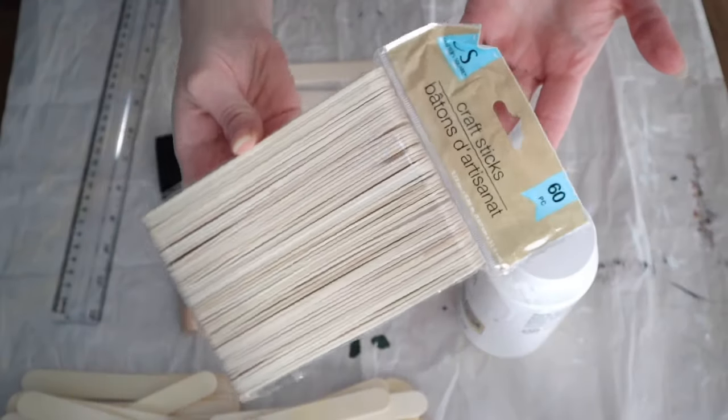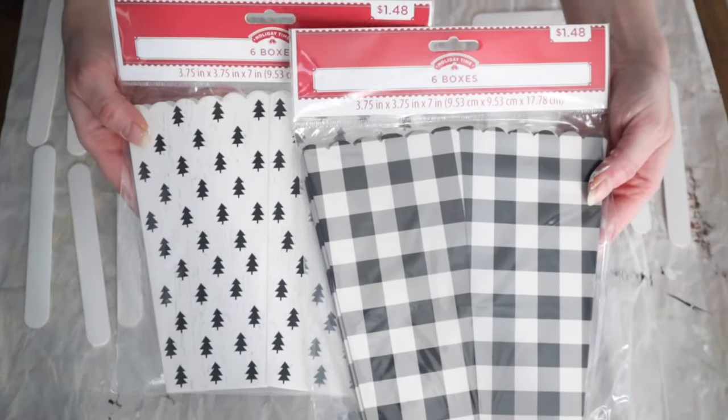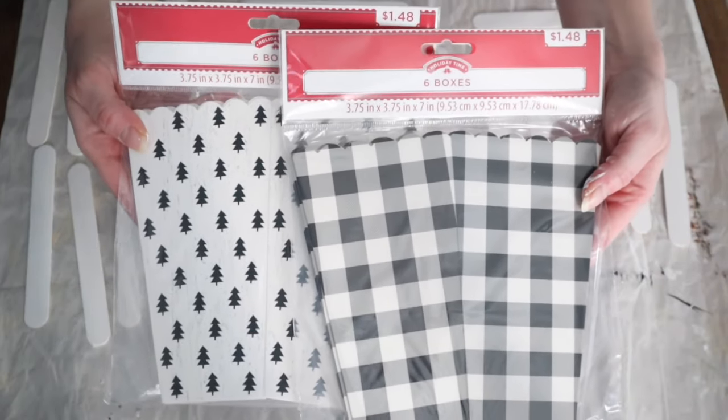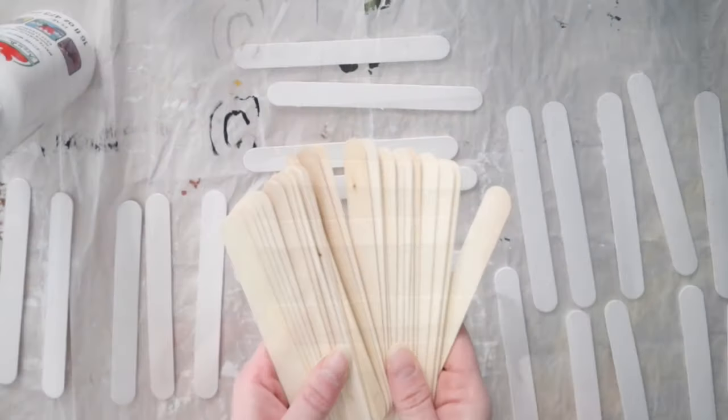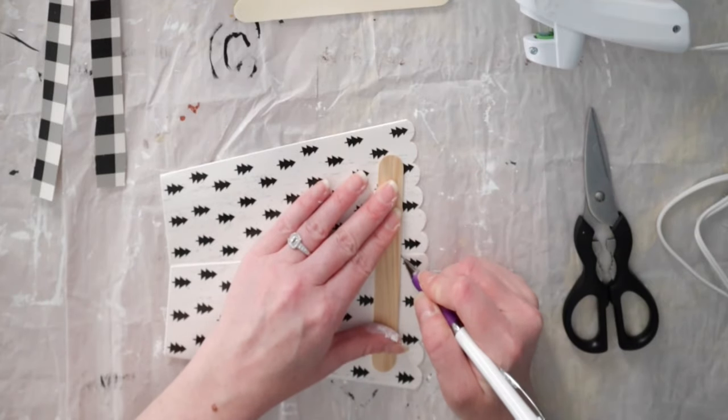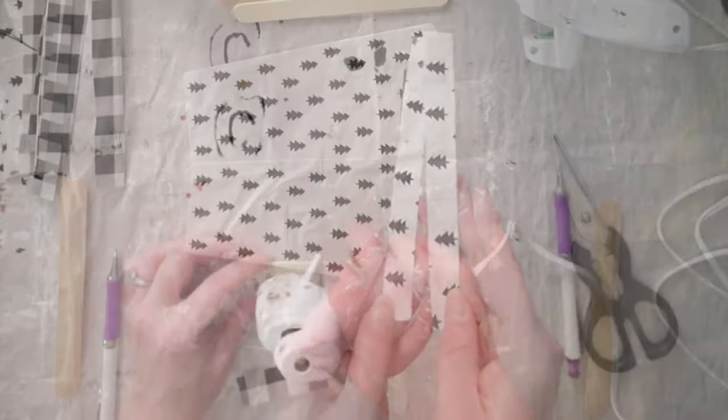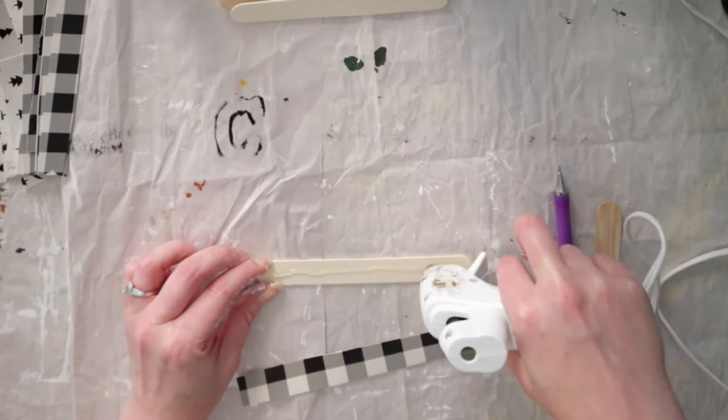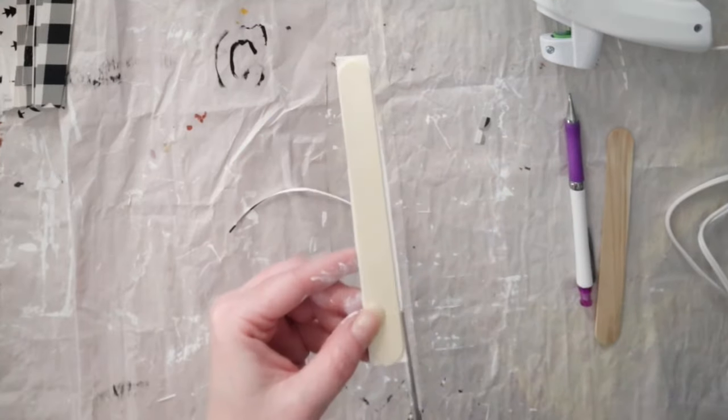For this next project, I'm using Dollar Tree's large craft sticks, some white paint, and some of these boxes I picked up from Walmart for a dollar forty-eight. I started by painting half the pack of the sticks white, and for the other half I just covered them with strips from the boxes with some hot glue. Then you're just going to trim those down.